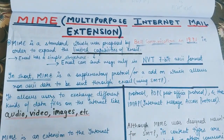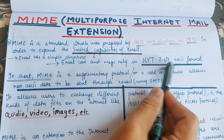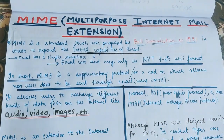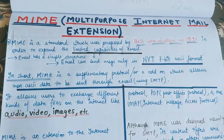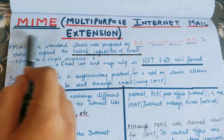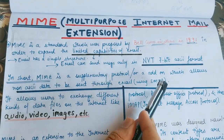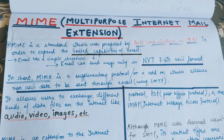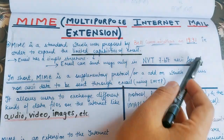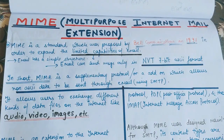When we used to send email in the earlier days, if our data was in a specific format — that is, the NVT 7-bit ASCII format — then only we could send the data via email. But if the data was not in this particular format, we were not able to send it. However, with the help of MIME, if we combine it with a normal email protocol like SMTP and send the email, then we can also send non-ASCII data to the receiver.